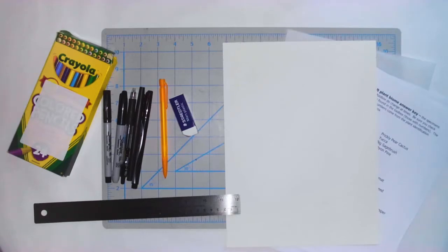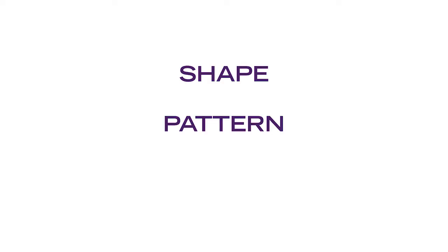Before we get started, let's first go over the important vocabulary words that you need to know: shape, pattern, and repetition.